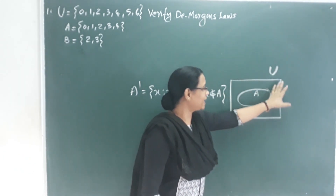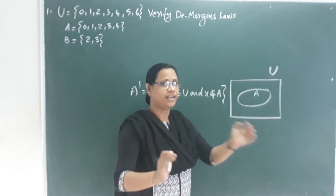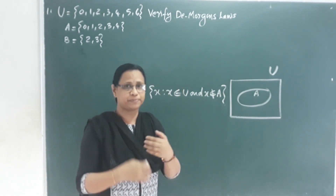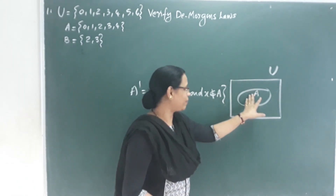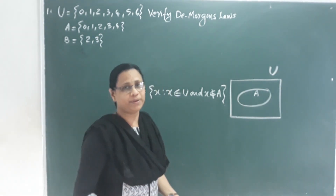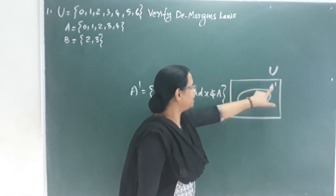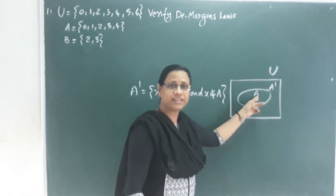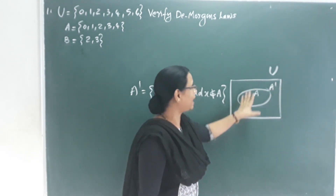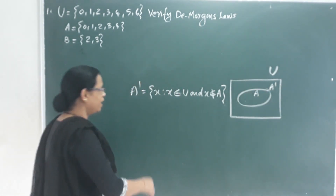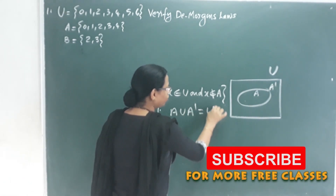The universal set U has certain elements, and A has a few elements. A complement, written A', contains the elements in U that are not in A. A property of complements is: A union A' is equal to the universal set U.